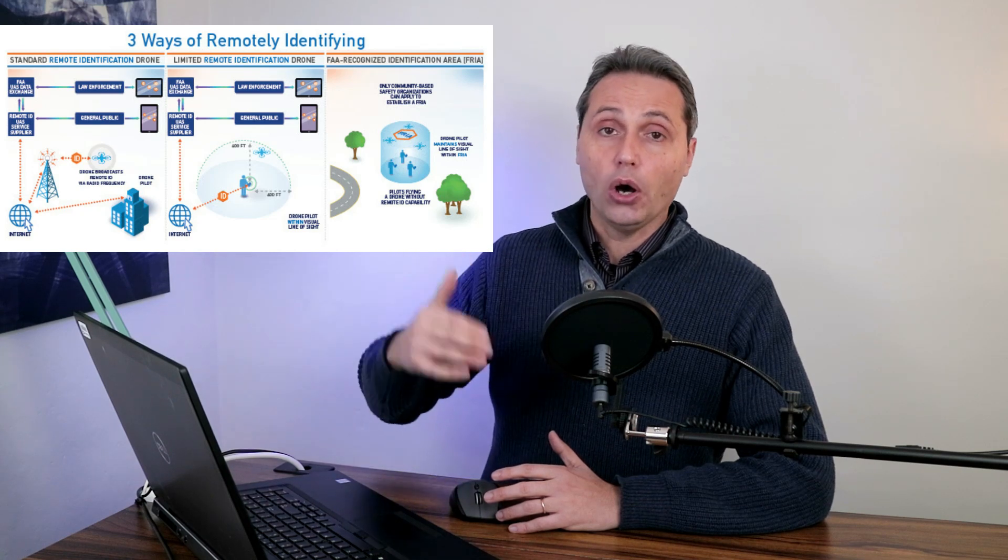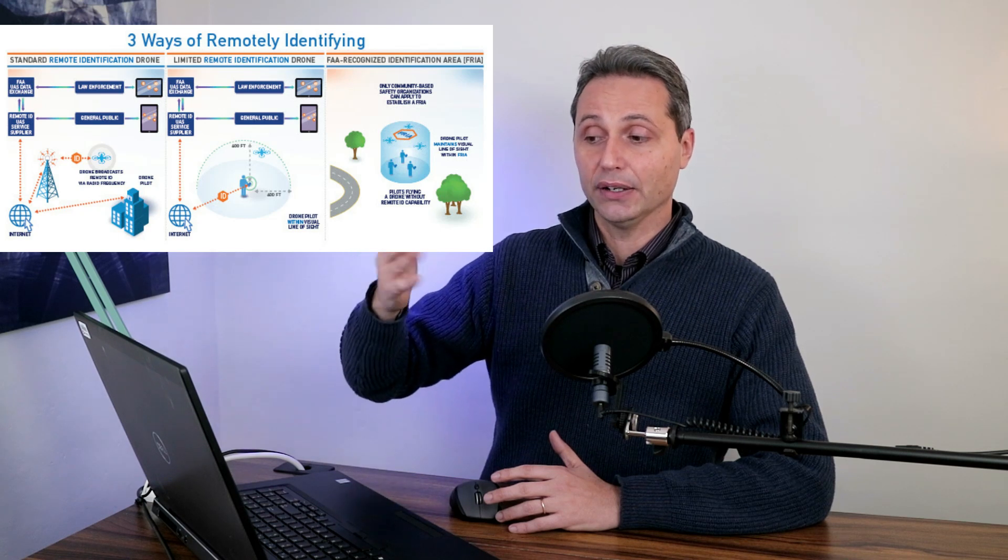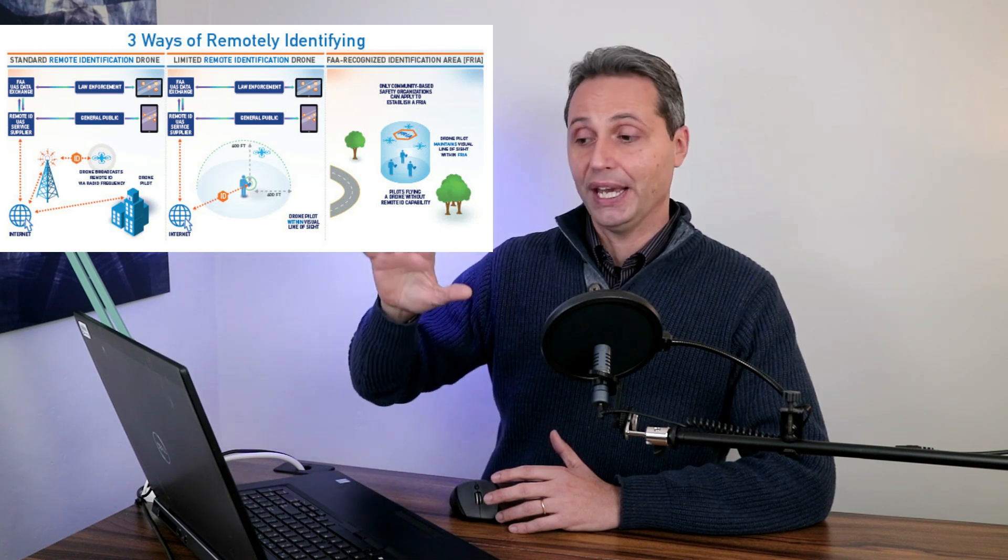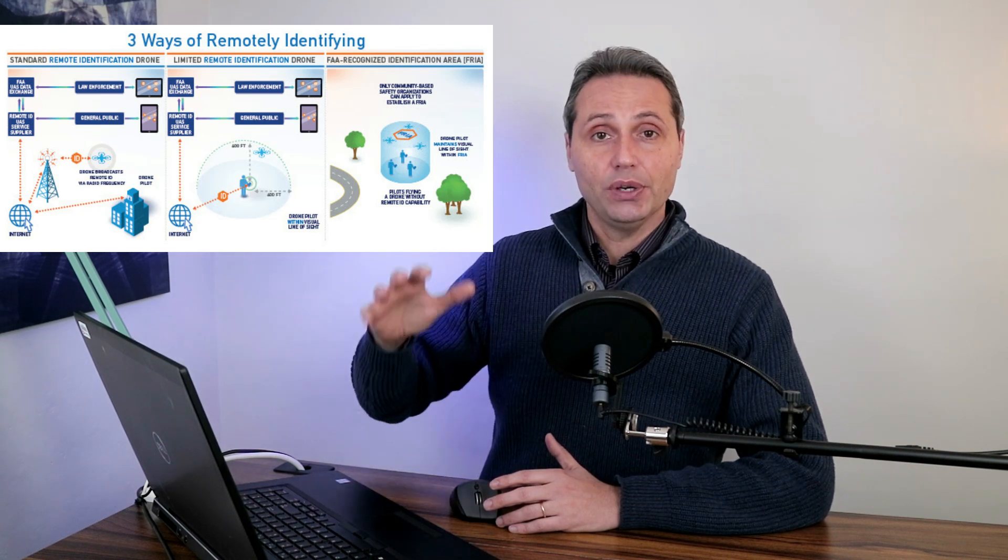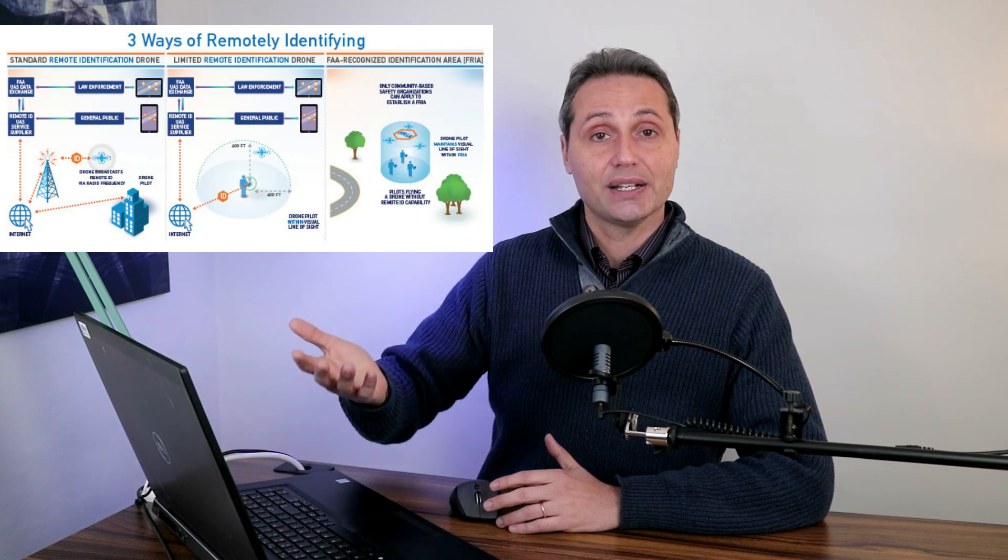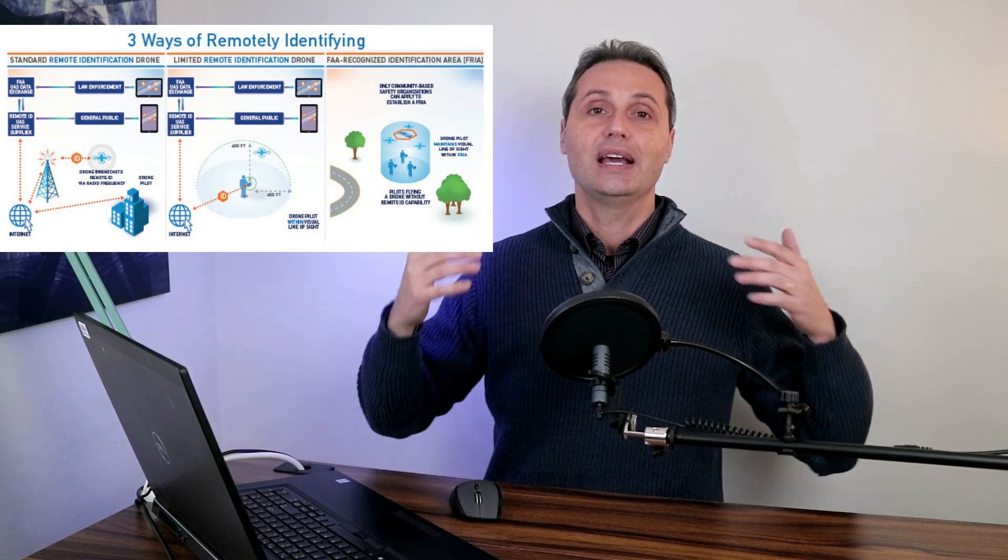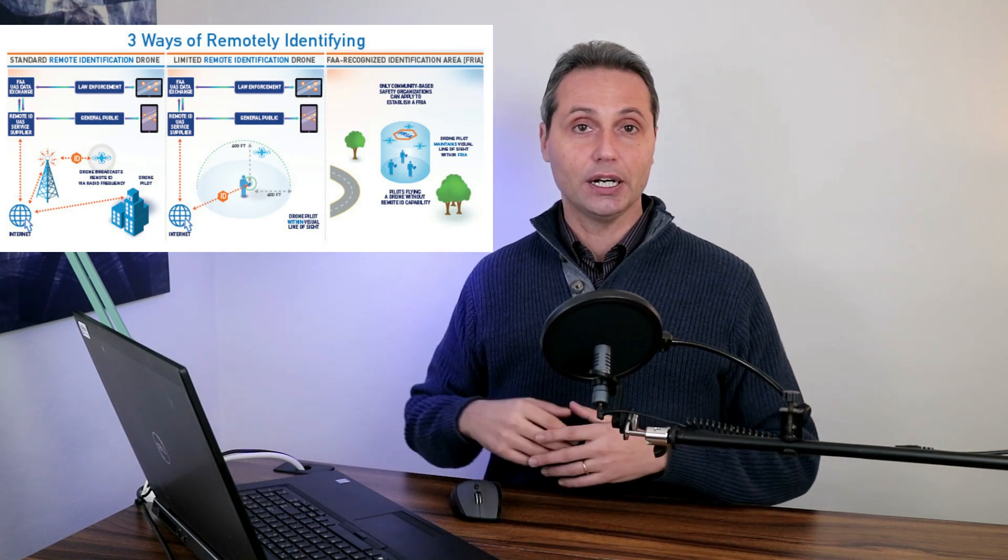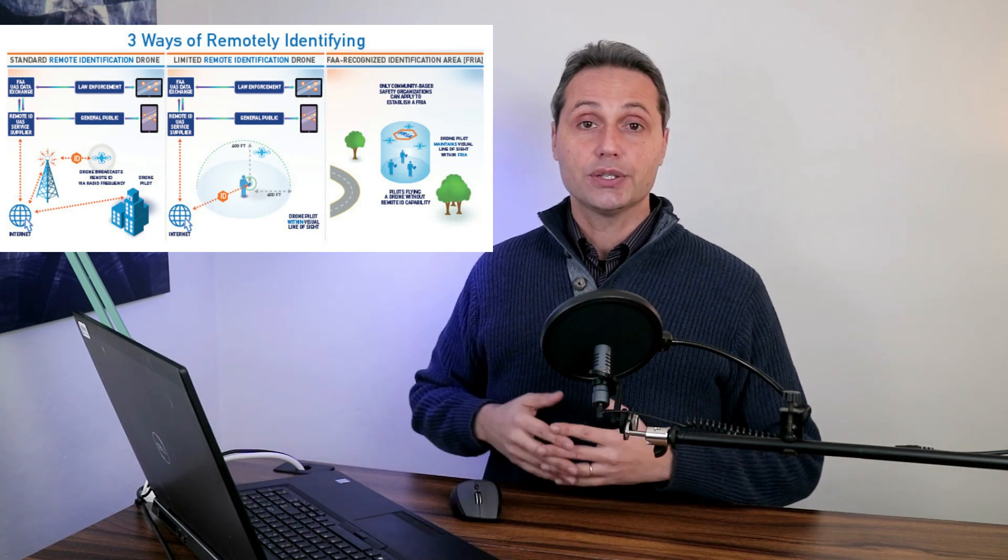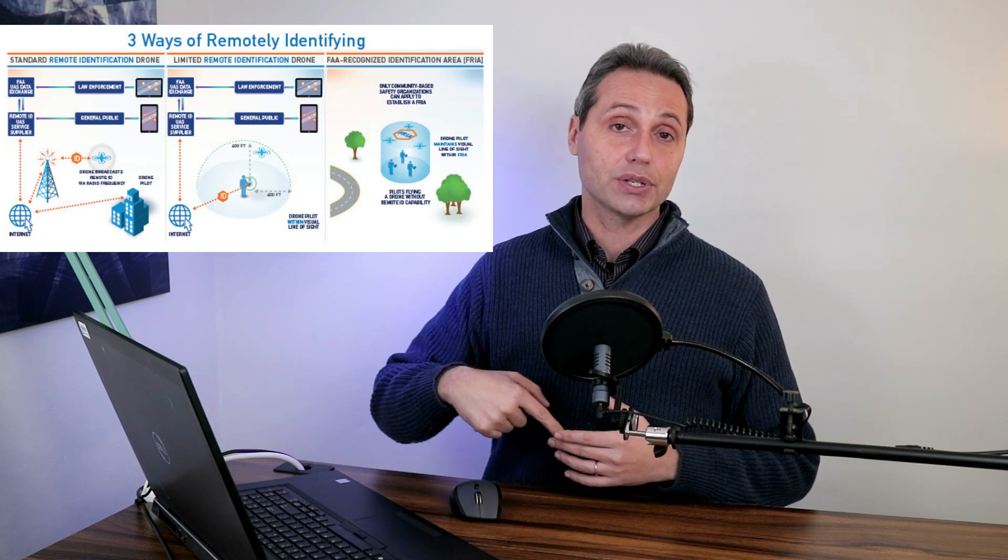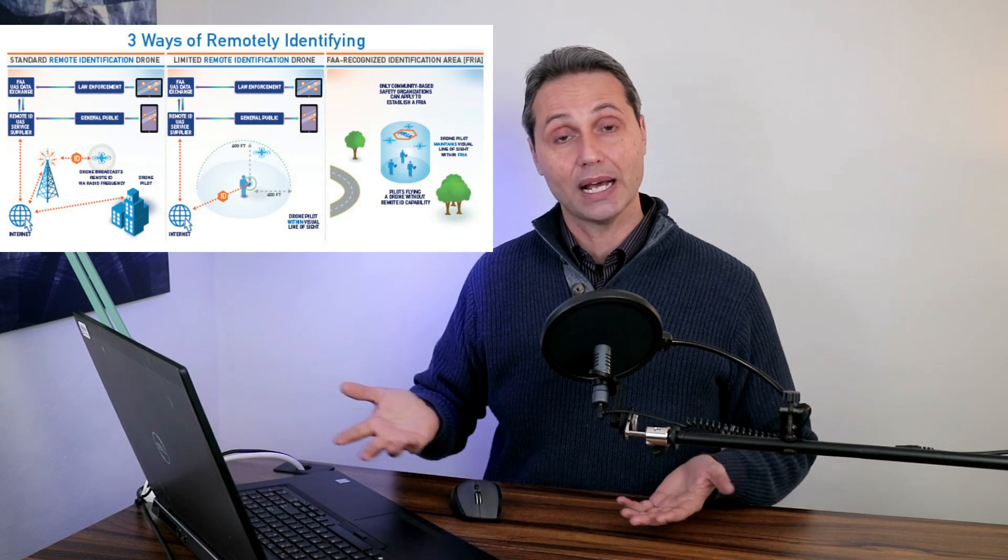If you don't abide to the standard ID, then you have to be either limited ID or you can fly only in FAA recognized identification areas. Limited ID means that the UAV itself is not able to broadcast this information. So it's your ground station that actually has to share your position, the drone position and so on to the internet. So that means that if you don't have a ground station, if you don't have an internet connection, you can't fly. And if you lose connection, you have to land as soon as practical.